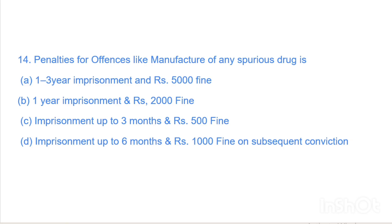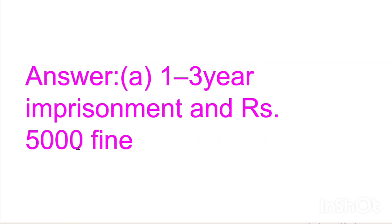Next question: Penalties for offenses like manufacture of any spurious drug — Option A: 1 to 3 years imprisonment and Rs. 5,000 fine, Option B: 1 year imprisonment and Rs. 2,000 fine, Option C: imprisonment up to 3 months and Rs. 500 fine, Option D: imprisonment up to 6 months and Rs. 1,000 fine on subsequent conviction. Answer is Option A, 1 to 3 years imprisonment and Rs. 5,000 fine for manufacturing of spurious drugs.